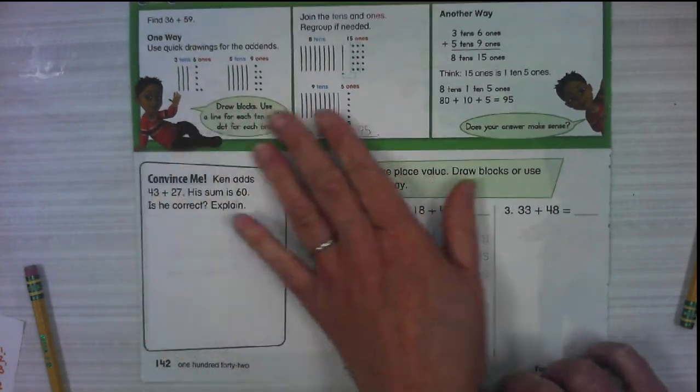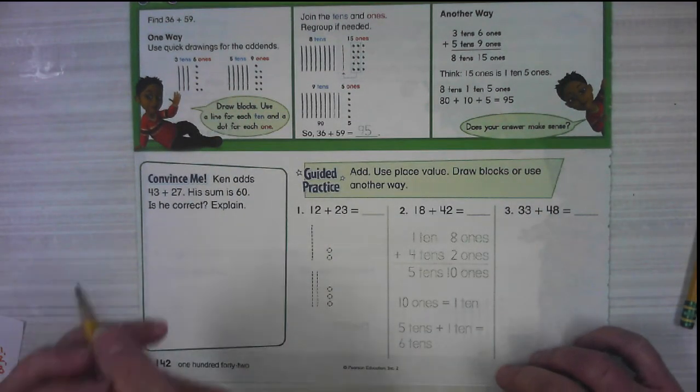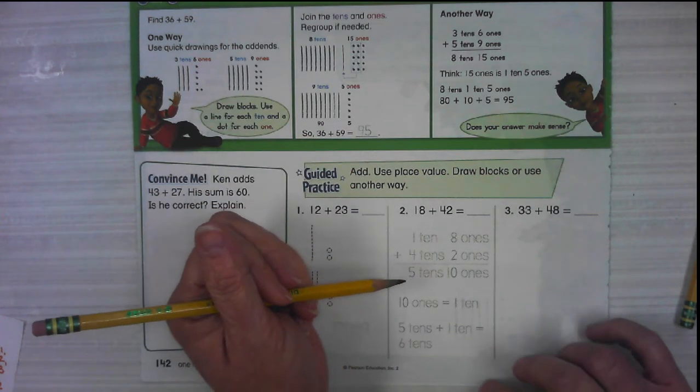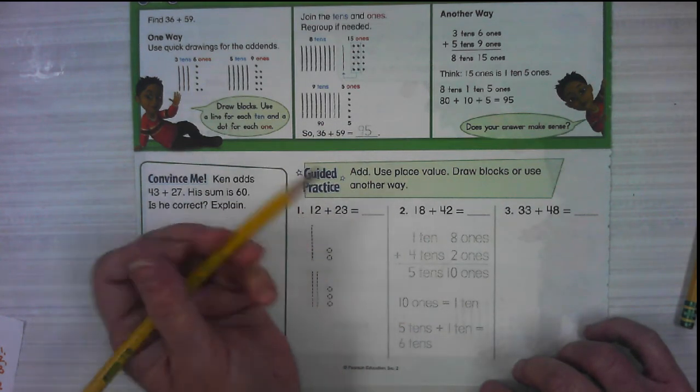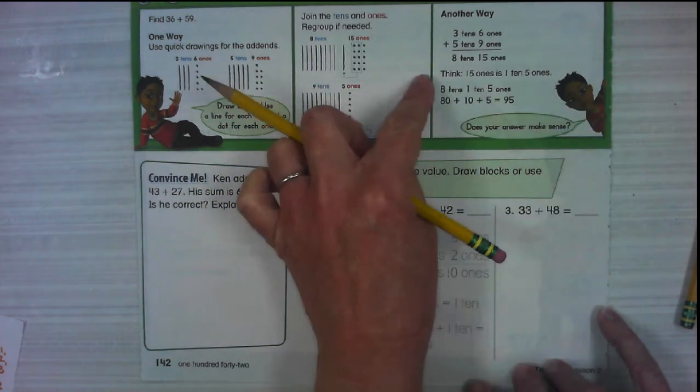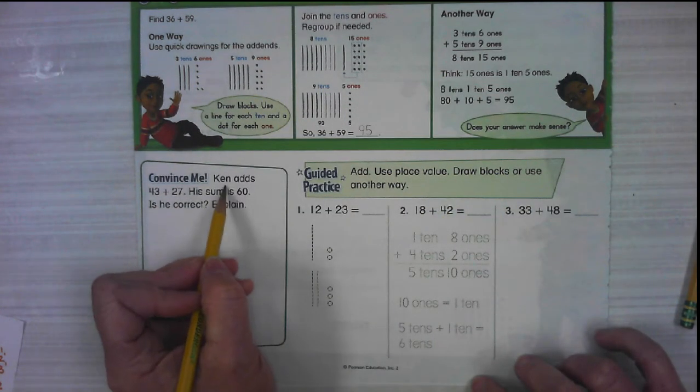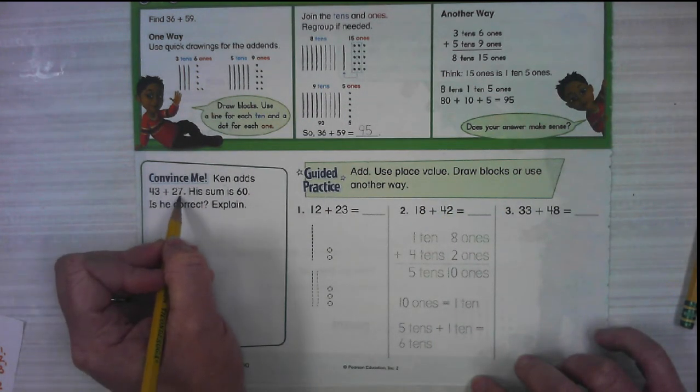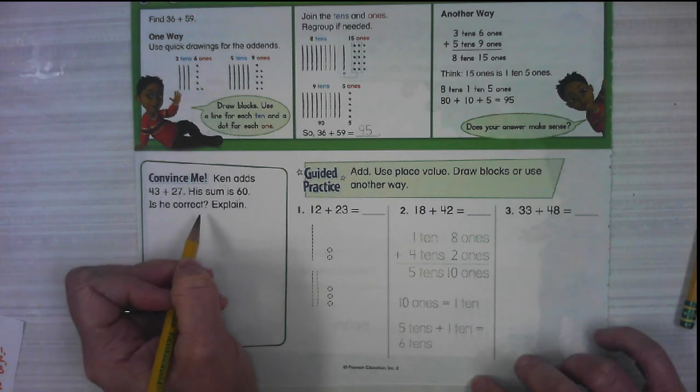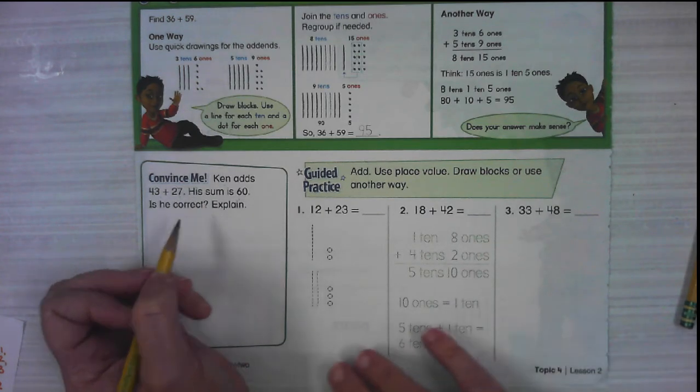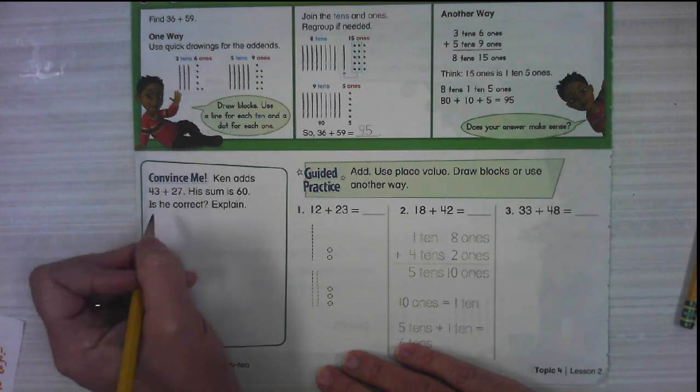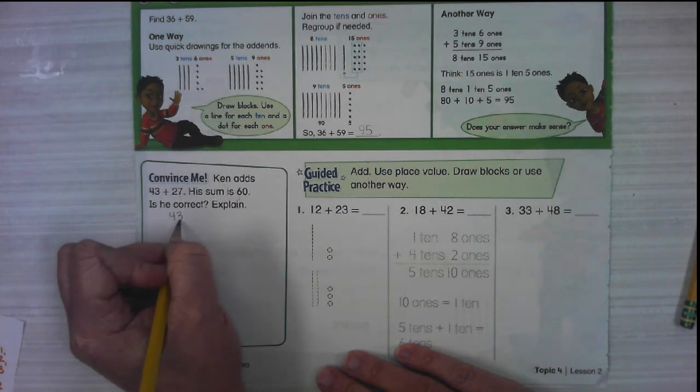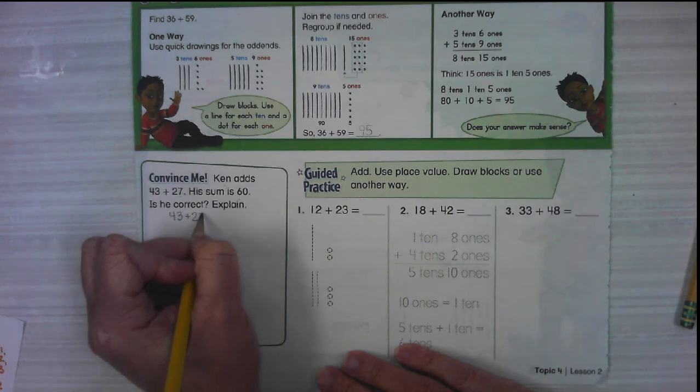We're not going to go through this because I just walked through all of those steps together, but they're good steps if you get stuck when you're working independently. Come back to this green box. Ken adds 43 plus 27 and gets 60. Is he correct? Well, let's figure it out first.